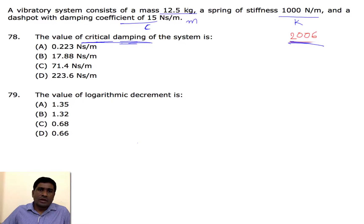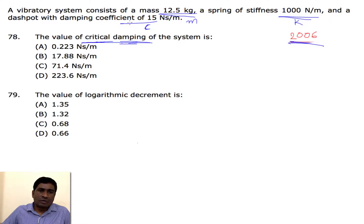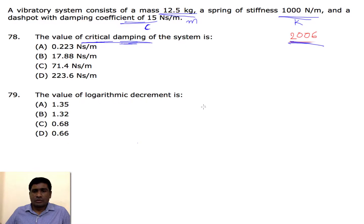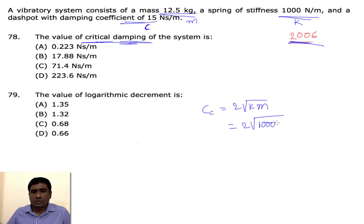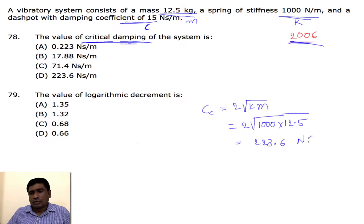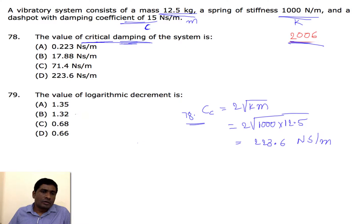This is Austrian 2006. In this system, mass is given as 12.5 and spring stiffness is k, and damping coefficient c is also given. The first part asks for critical damping. cc = 2 × √(k × m) = 2 × √(1000 × 12.5), which equals 223.26 Newton-seconds per meter.